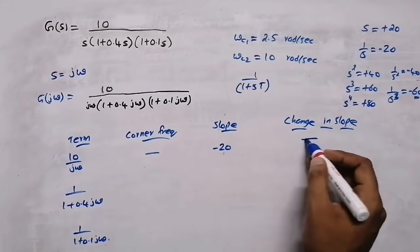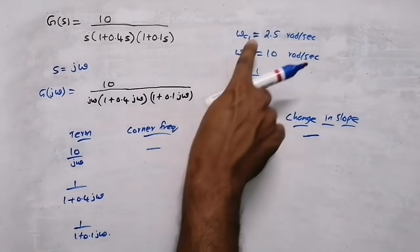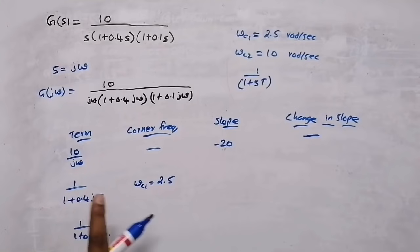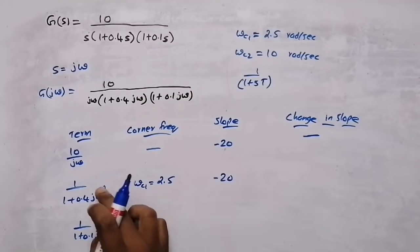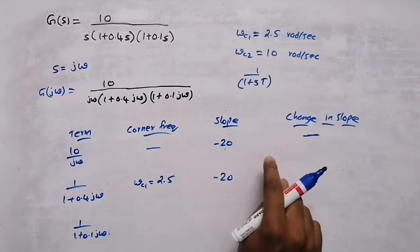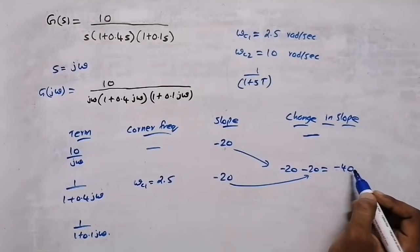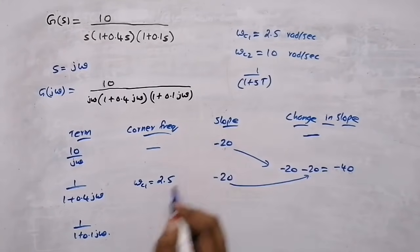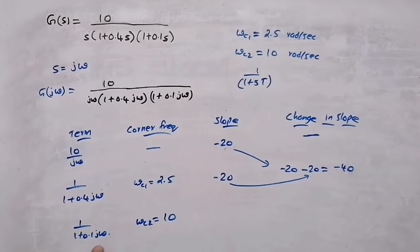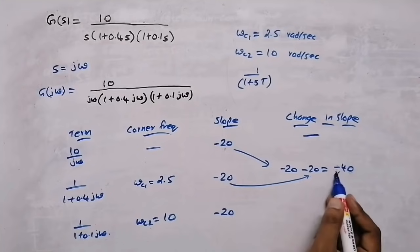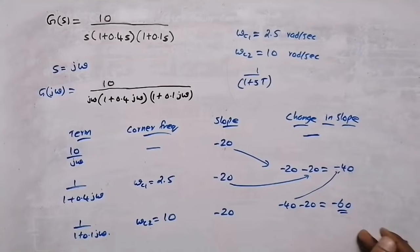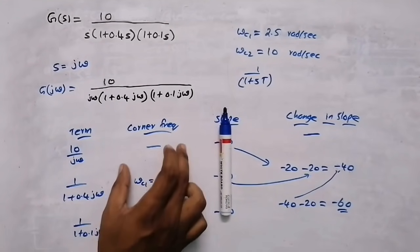For the second term, the corner frequency is ω_c1 = 2.5. The slope is −20 (denominator, power 1). The initial slope was −20, and adding another −20 gives a change in slope of −40. For the third term, the corner frequency is ω_c2 = 10. Slope is again −20. Previous slope was −40, so −40 + (−20) = −60 change in slope. Always check that corner frequencies are in ascending order before computing slopes.